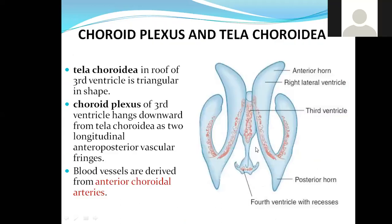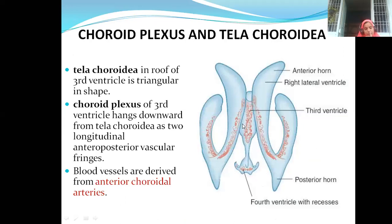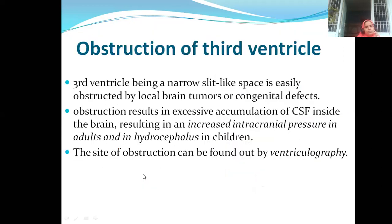Nearby arteries supply blood vessels to the choroid plexus. As I told you yesterday, the posterior inferior cerebellar artery supplies the fourth ventricle. In the case of the third ventricle, it is the anterior choroidal arteries.